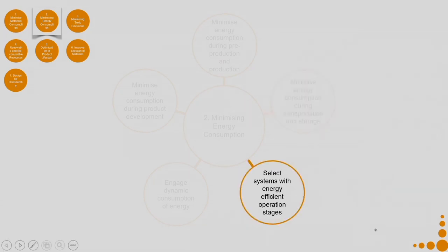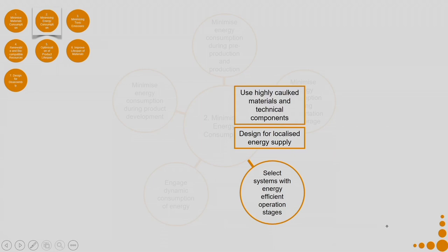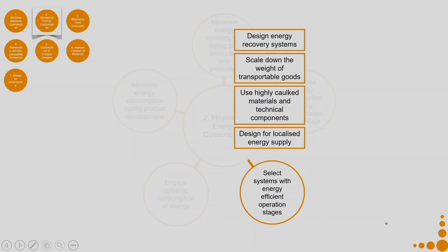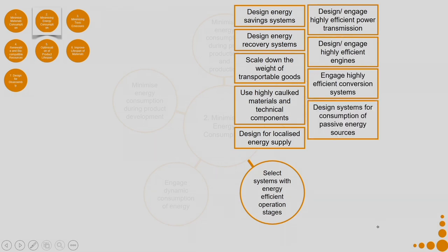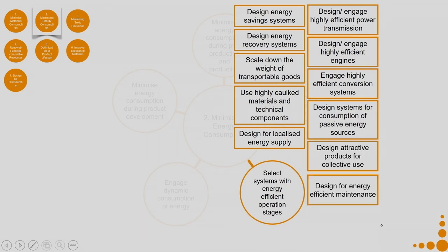Coming to select systems with energy-efficient operation stages: design for localized energy supply, use highly charged materials and technical components, scale down the weight of transportable goods, design energy recovery systems, design energy savings systems, engage highly efficient power transmission and engines, engage highly efficient conversion systems, design systems for consumption of passive energy sources, design attractive products for collective use, design for energy-efficient maintenance, and design for energy-efficient operational stages. You can apply some of these whichever is applicable, or any other strategy applicable to your context.